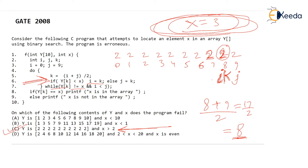The only way to answer this question is to run it on the scratch pad given to you during the GATE exam, as fast as you can, checking all these conditions against the array. I didn't do anything extraordinary.